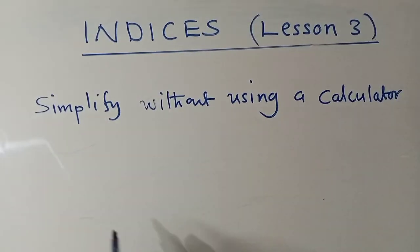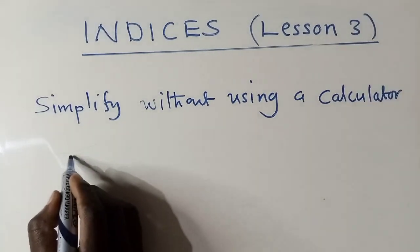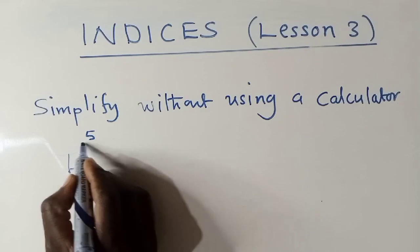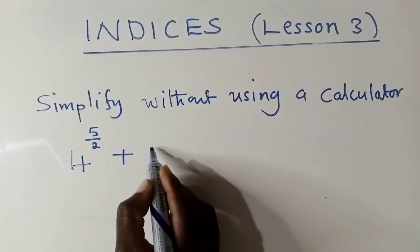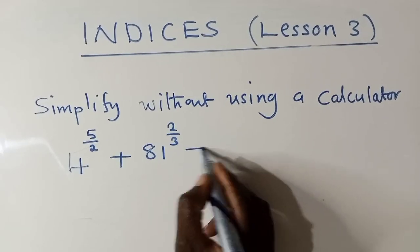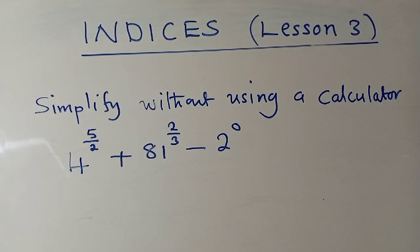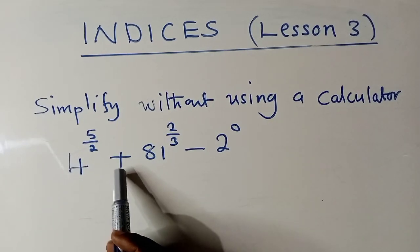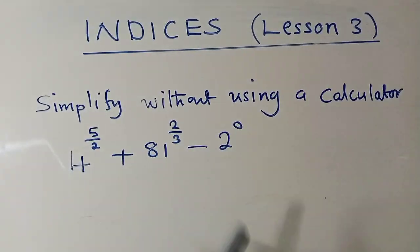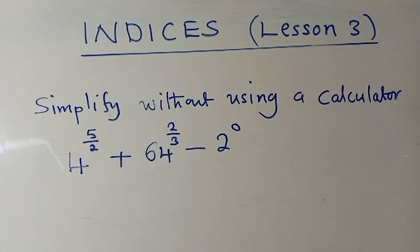The question says: simplify without using a calculator. We have four to the power five over two, plus 64 to the power two over three, minus two to the power zero. Simplify this and comment the answer.